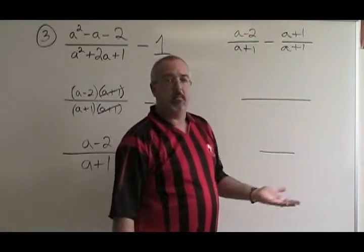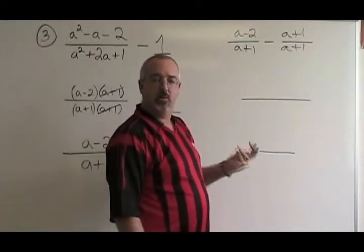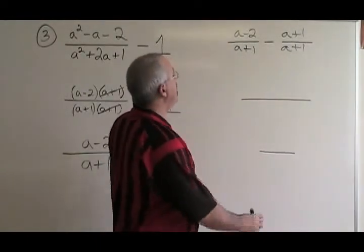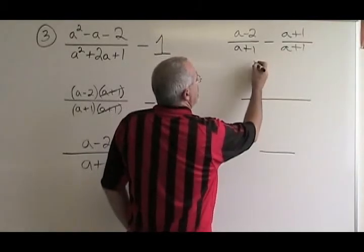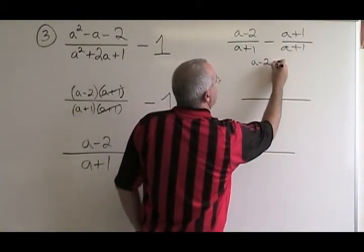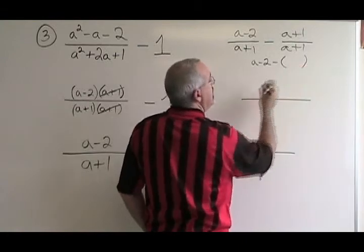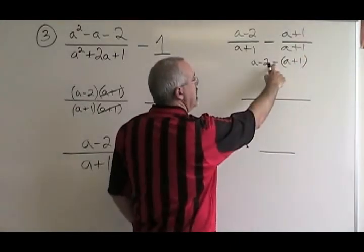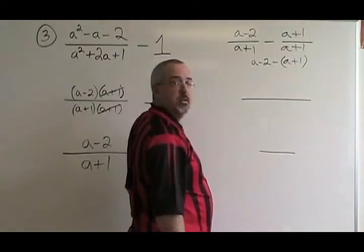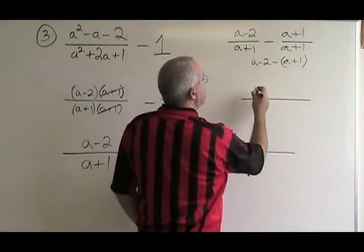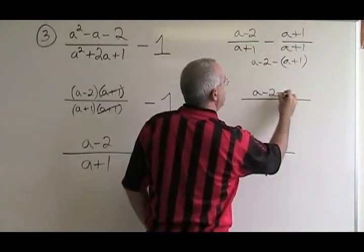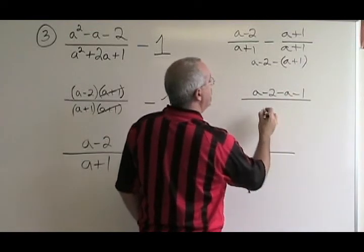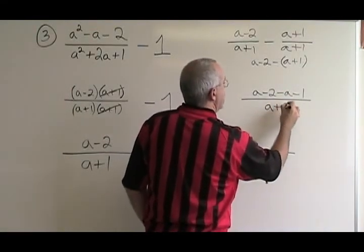Now we have a common denominator, and it's just like any other adding or subtracting of algebraic fractions. The polynomial phase, I will write a minus 2 minus, and then use a bracket and put a plus 1 in it so that I can be careful because of this minus sign to make sure I get all of my signs correct. This becomes a minus 2 minus a minus 1, and we still have the common denominator a plus 1.